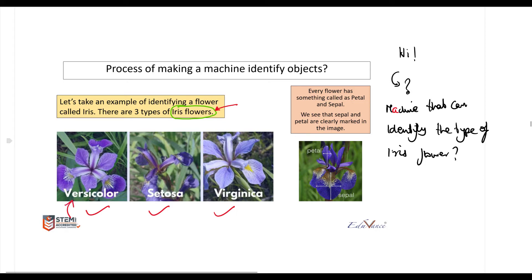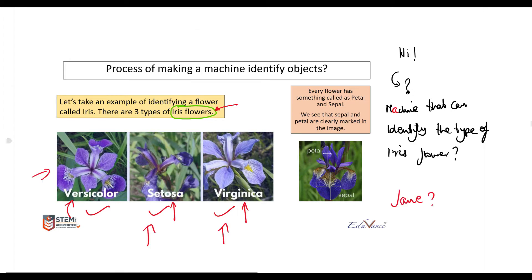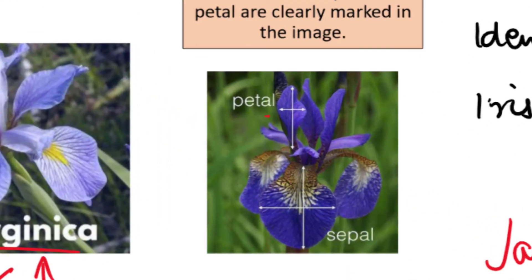There are three types of iris flowers: the first type is called versicolor, the second type is called setosa, and the third type is called virginica. You ask Jane, 'How do I differentiate between these three?' She tells you there are two parts to the flower — the first is called the petal and the other is called the sepal.